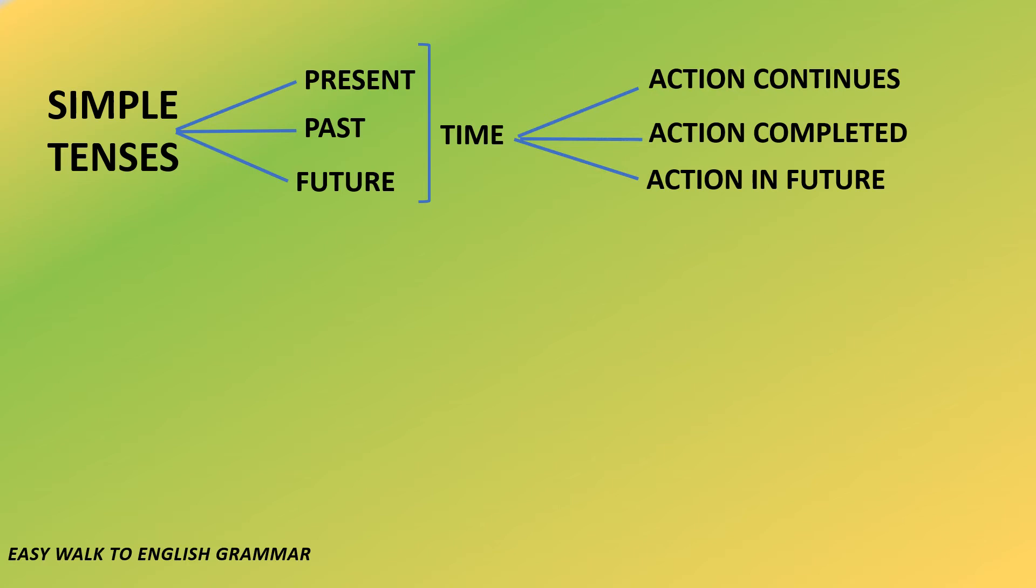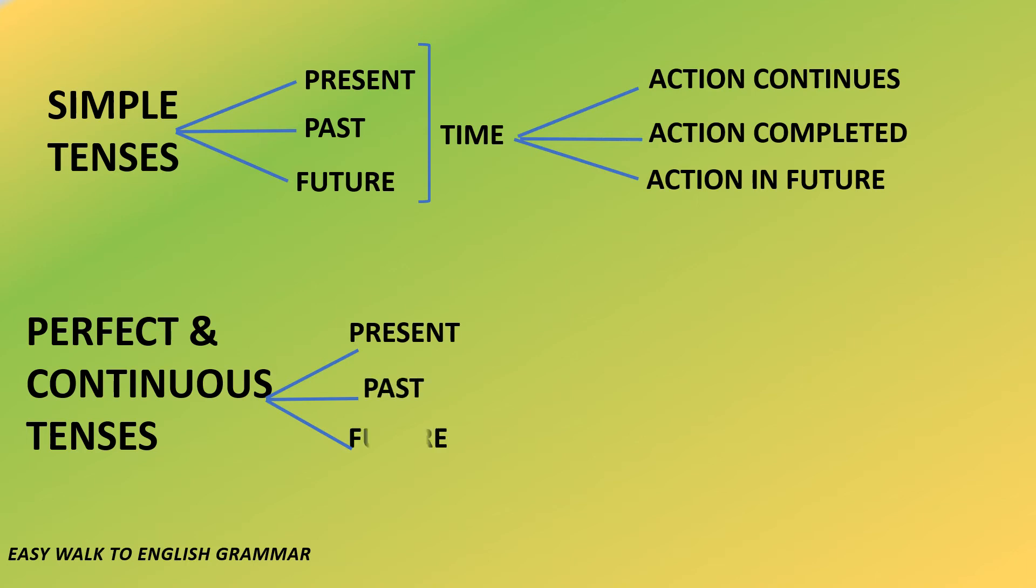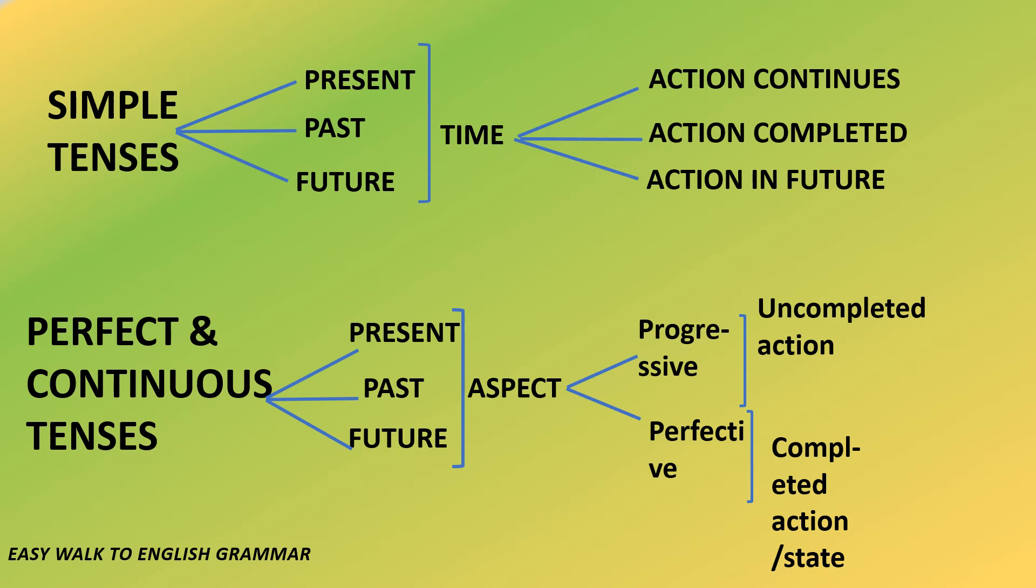What is new in this? When we come to perfect and continuous tenses, under this category perfect continuous tenses will also come. These tense forms are also divided into present, past, and future, but they refer to aspect, not time. What is this aspect? Aspect is divided into two: progressive and perfective. Progressive refers to uncompleted action, means action is going on, progressing.